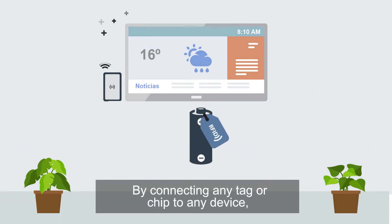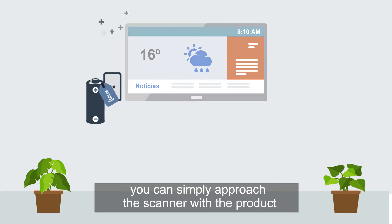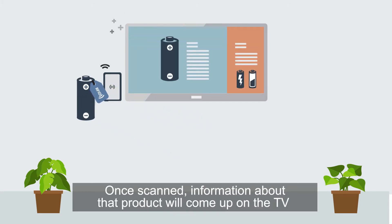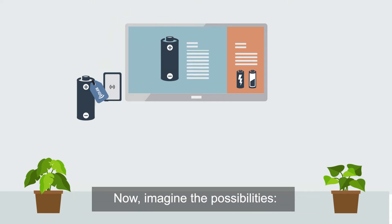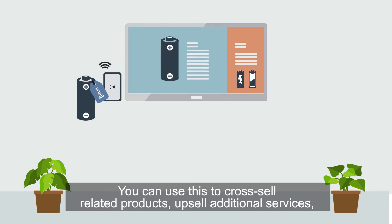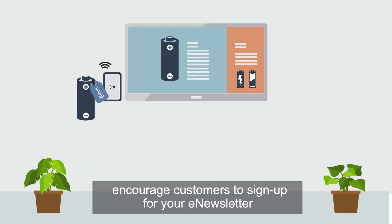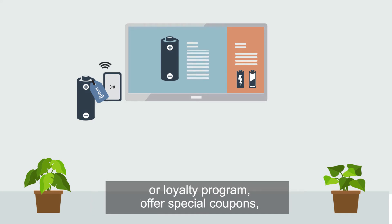By connecting any tag or chip to any device, you can simply approach the scanner with the product. Once scanned, information about that product will come up on the TV. Now imagine the possibilities — you can use this to cross-sell related products, upsell additional services, encourage customers to sign up for your e-newsletter or loyalty program.